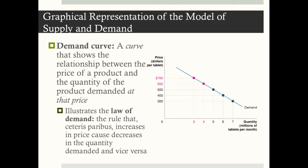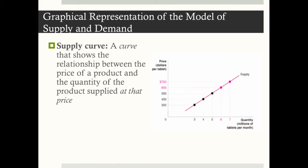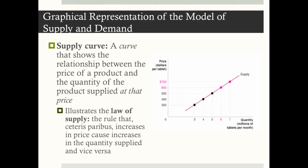For example, when the price falls from $700 to $600, quantity demanded rises from 3 to 4 million. The supply curve shows the relationship between the price of a product and the quantity supplied at a particular price. It illustrates the law of supply: Ceteris Paribus, increases in price cause increases in the quantity supplied, and vice versa. For example, when the price of a tablet increases from $300 to $400, the quantity supplied increases from 3 to 4 million.